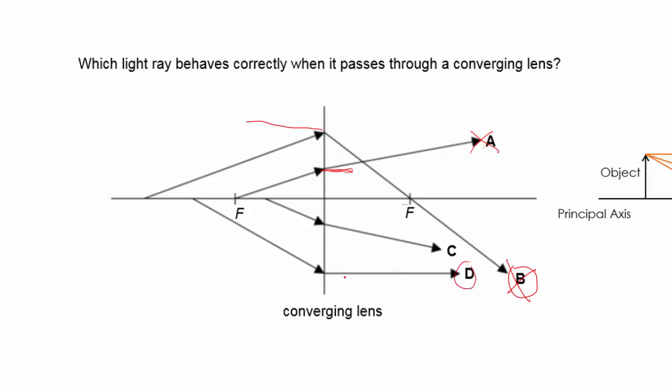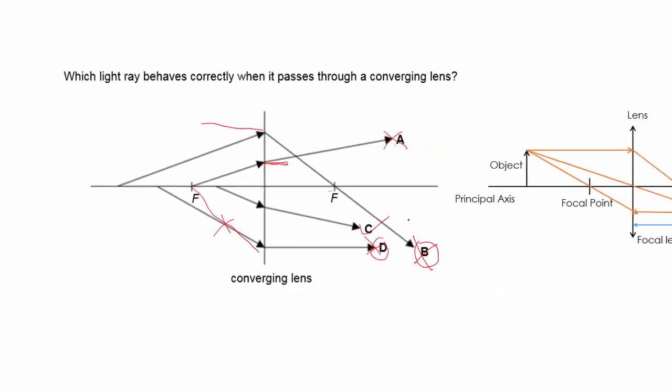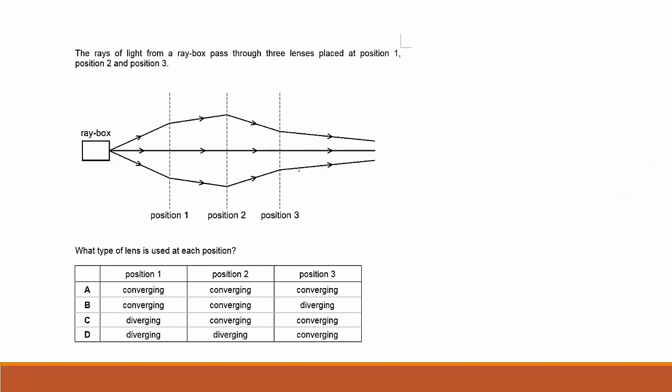D is parallel to the principal axis, but since it's parallel to the principal axis before it passes through the lens, it should come from F. But since it didn't come from F, therefore D is also not the correct answer. So in this case, C is the correct answer.